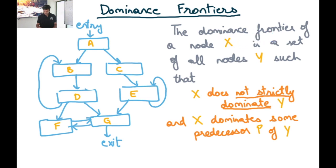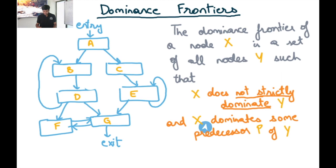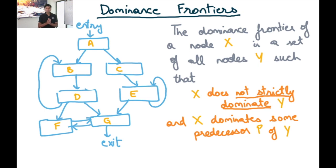The dominance frontier of a node X is a set of all nodes Y such that X does not strictly dominate Y, and X dominates some predecessor P of Y. So Y is in the dominance frontier of X if X does not strictly dominate Y but X dominates some predecessor of Y.